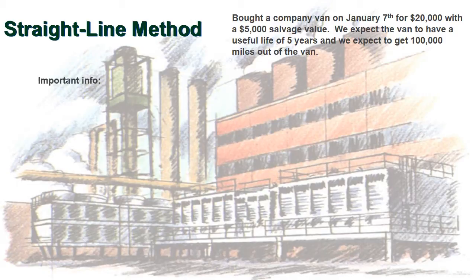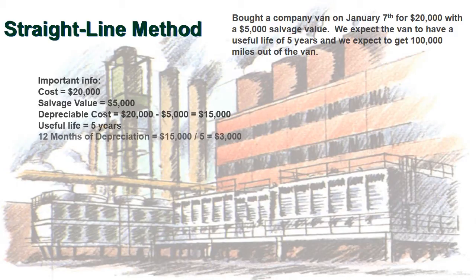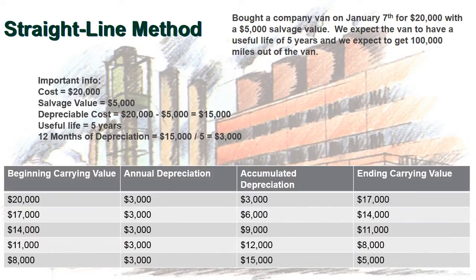We need to identify the important information. The cost of the van is $20,000. The salvage value is $5,000. Our depreciable cost is $20,000 minus $5,000, which gives us $15,000. The useful life is five years. To calculate depreciation under straight-line, we take the depreciable cost of $15,000 and divide it by the useful life of five years, giving us $3,000 of depreciation every single year.